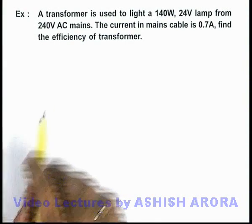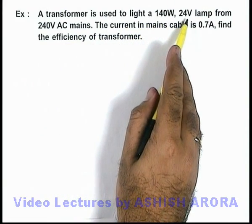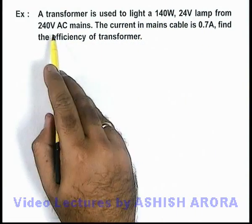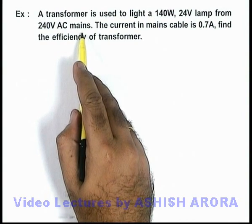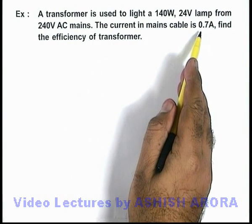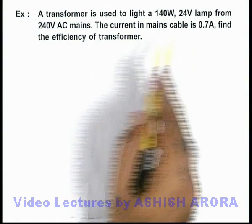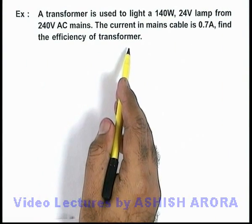In this example, we are given that a transformer is used to light a 140 watt, 24 volt lamp from a 240 volt AC mains. It is saying the current in mains cable is 0.7 ampere, that is obviously on the primary coil of the transformer. We are required to find the efficiency of the transformer.